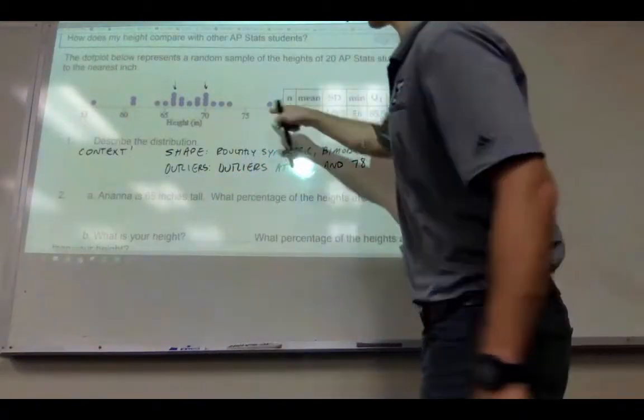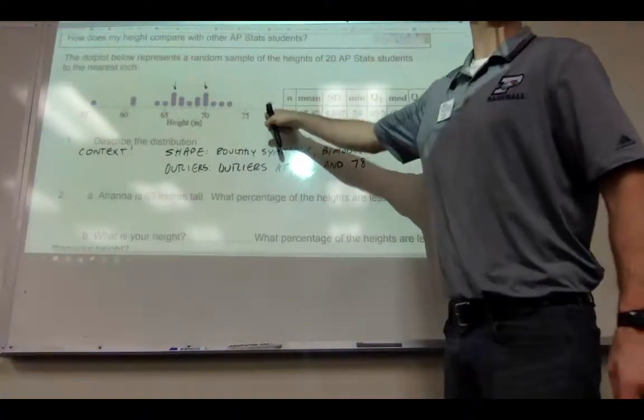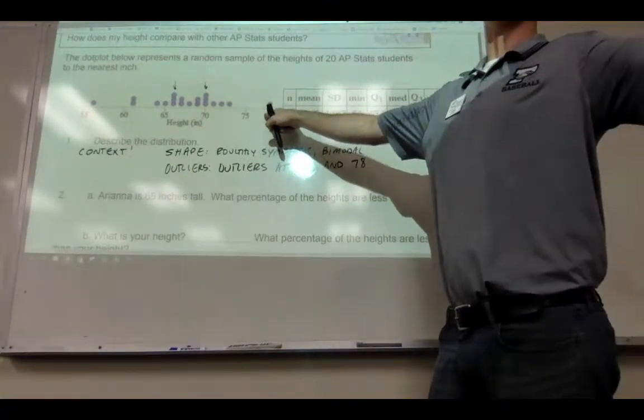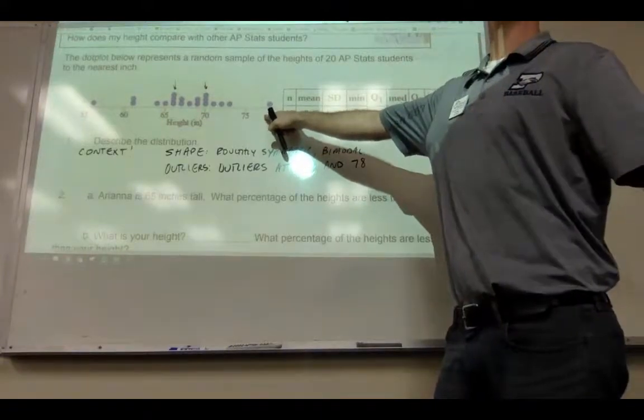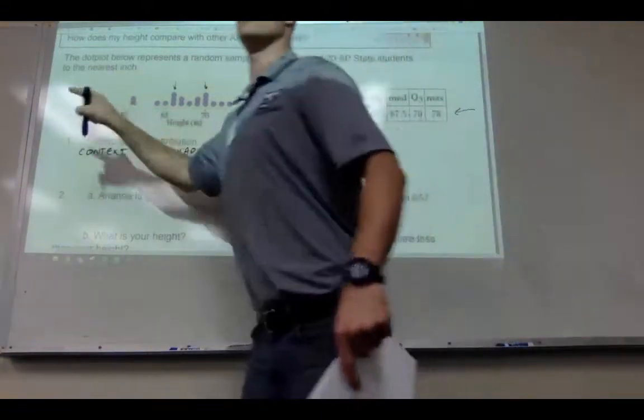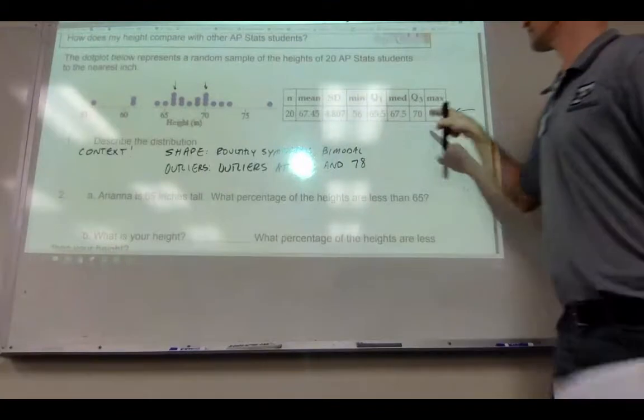So you'd say two outliers at 56 and 78. And as noted, how do we know this is 78? Check this out. This is important. And this group back here figured it out. How do you know it's at 56 and 78? Well, this is your max. This is your min. So it's max and min.